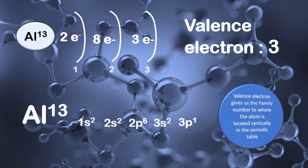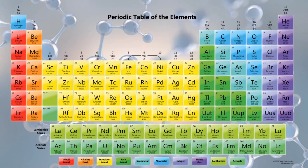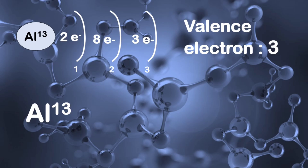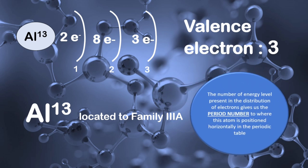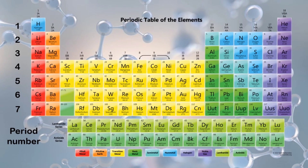Did you know that the valence electrons give us the family number to where the atom is located vertically in the periodic table? For example, since the valence electron of aluminum is 3, we can locate it at family 3A. Using the half-shell notation, we can predict the period number by identifying the number of energy levels present. Aluminum has 3 energy levels, so therefore the period number of aluminum is 3.